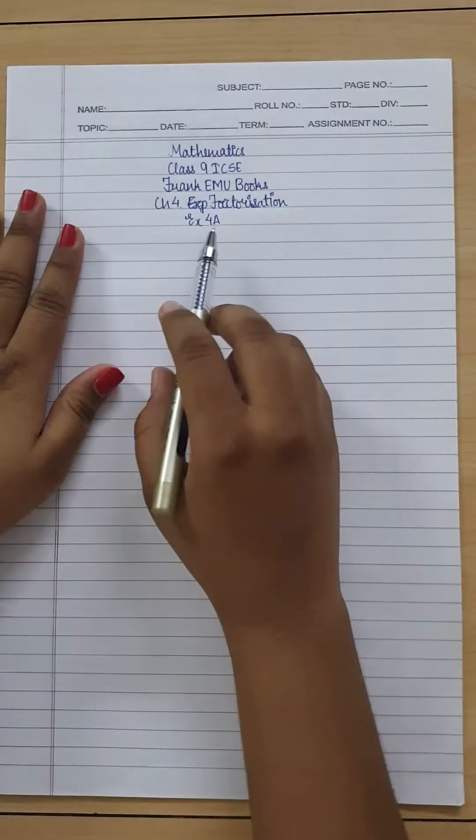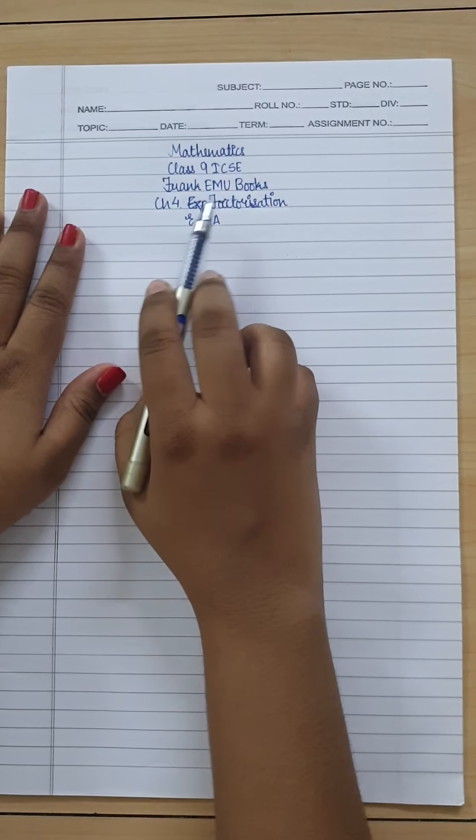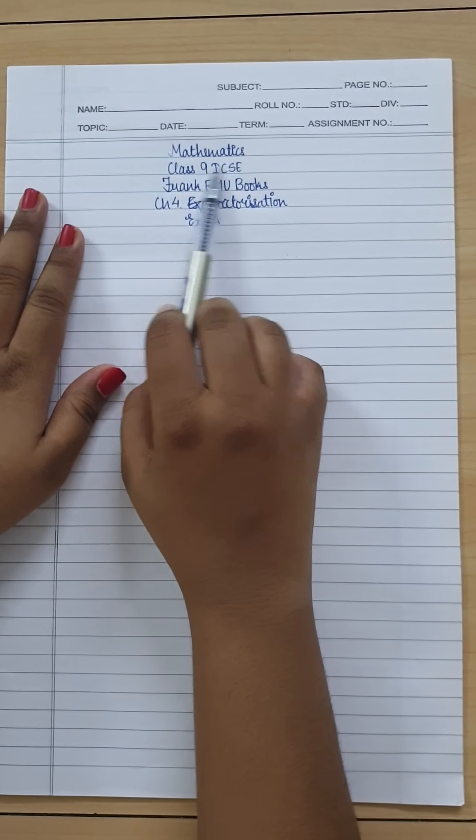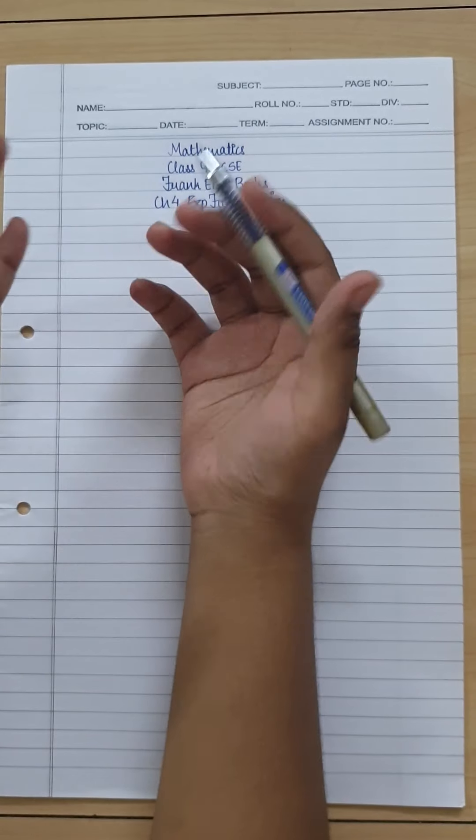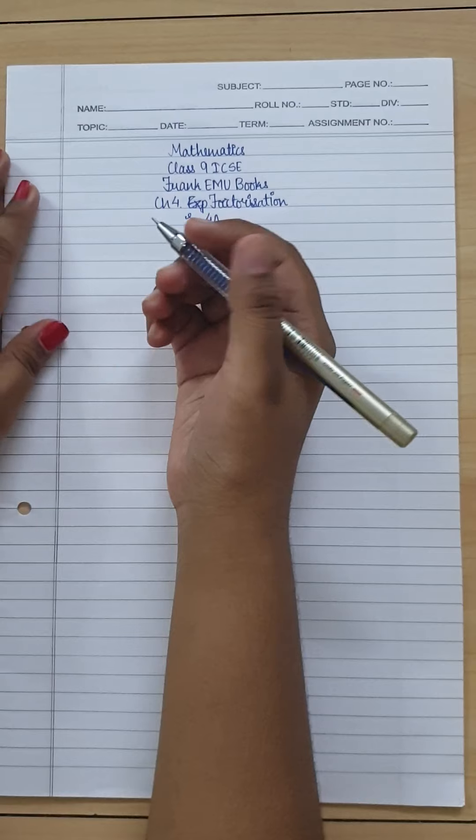Hey guys, welcome to my channel. In today's video we are going to be starting with Exercise 4A, that is chapter Factorization for Class 9 ICSE from Frank textbooks. So the overall question for this exercise is: factorize the following.